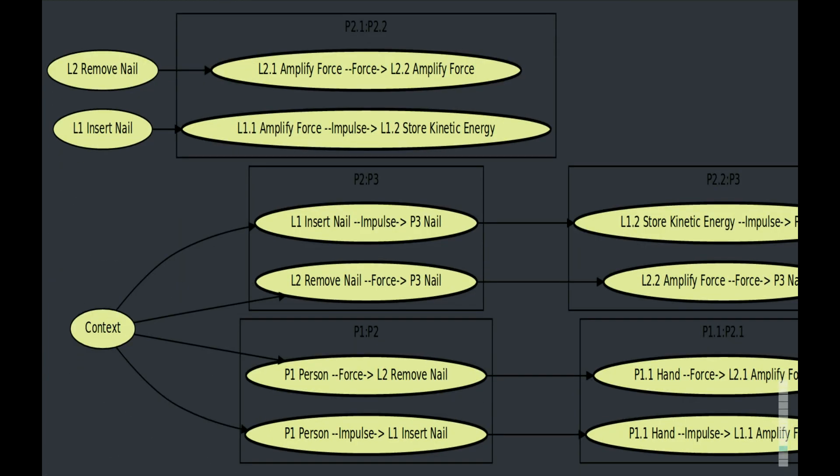So you can see that there are context interfaces, the P1 to P3 interface and the P1 to P2 interface. That's the interface between the human and the hammer and the interface between the hammer and the nail. They break down onto the finer level interfaces and the flows also break down onto those finer level interfaces.